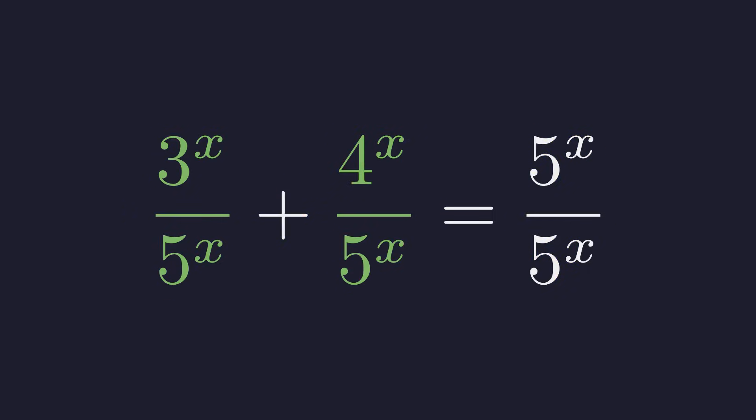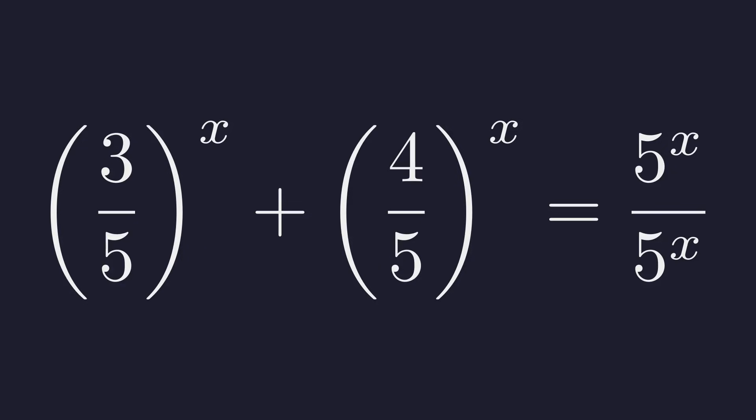Now we can use the exponent rule. A to the x over b to the x equals a over b to the x. Applying this rule, we get 3 fifths to the x plus 4 fifths to the x.